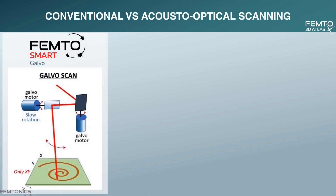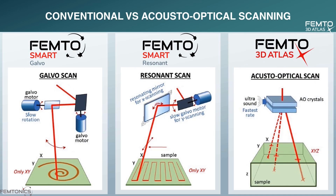Scanning in conventional 2P systems happens with galvo-galvo or galvo-resonant moving mirrors. The inertia of the moving physical parts limits the speed of the system. In the acousto-optical system, you are taking advantage of refractive changes in tellurium dioxide crystals. By eliminating inertia-limited moving parts, you are able to reach a yet unforeseen scanning speed. This does not mean you cannot perform galvo or resonant-like scanning should you wish to, but you also have access to a wide array of new possibilities that lie in random access 3D imaging. That is why we call Femto3D Atlas an all-in-one tool.